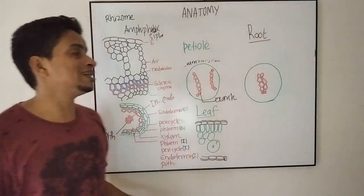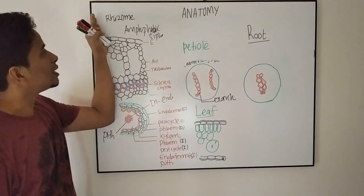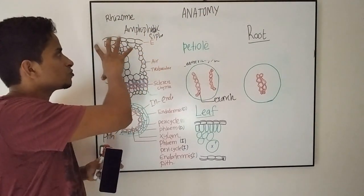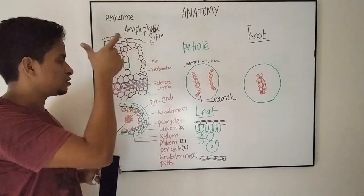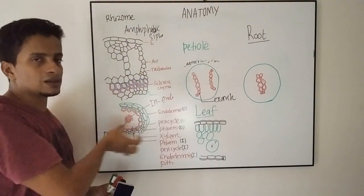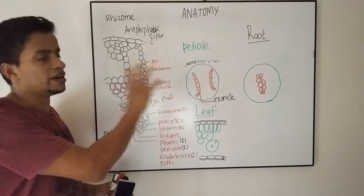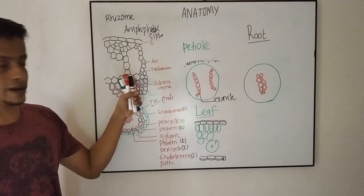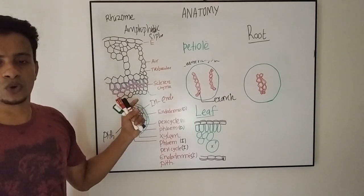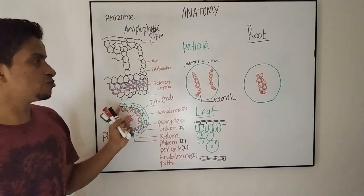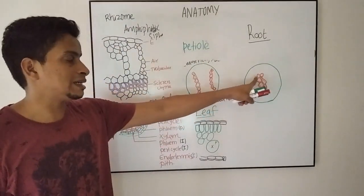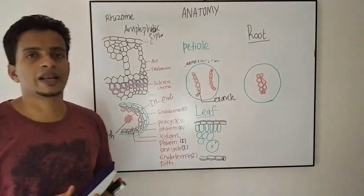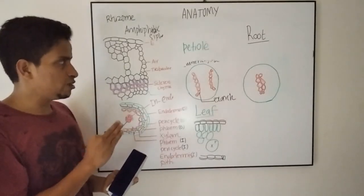Coming to the internal anatomy of root, it is somewhat similar. Rhizome, petiole, and root are somewhat similar in epidermis and cortical characters, but in vascular structure they may differ. The root has an outer epidermis followed by an endodermis. The sclerenchymatous layer is very few or absent in root, followed by ground parenchyma, endodermis, pericycle, and a central core of xylem in exarch condition, which is followed by phloem. This is about the internal anatomy of rhizome, petiole, leaf, and root.